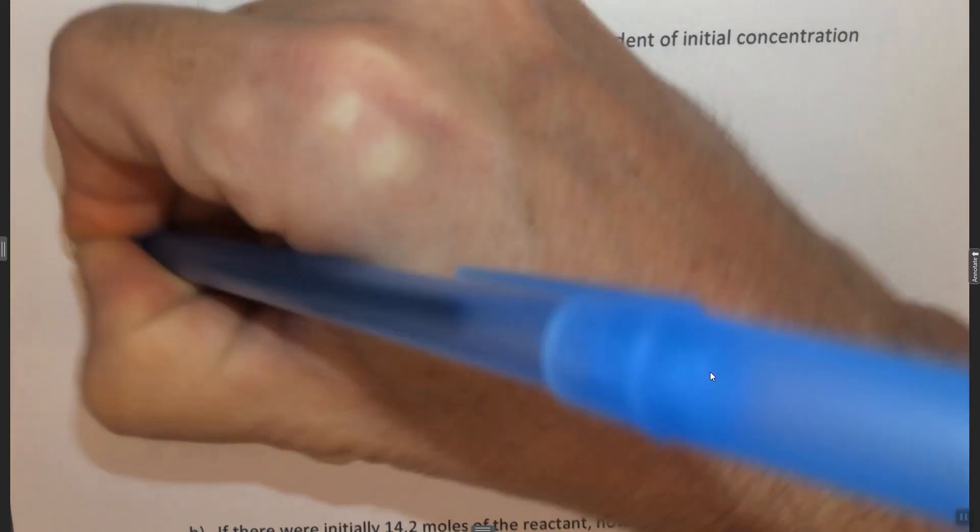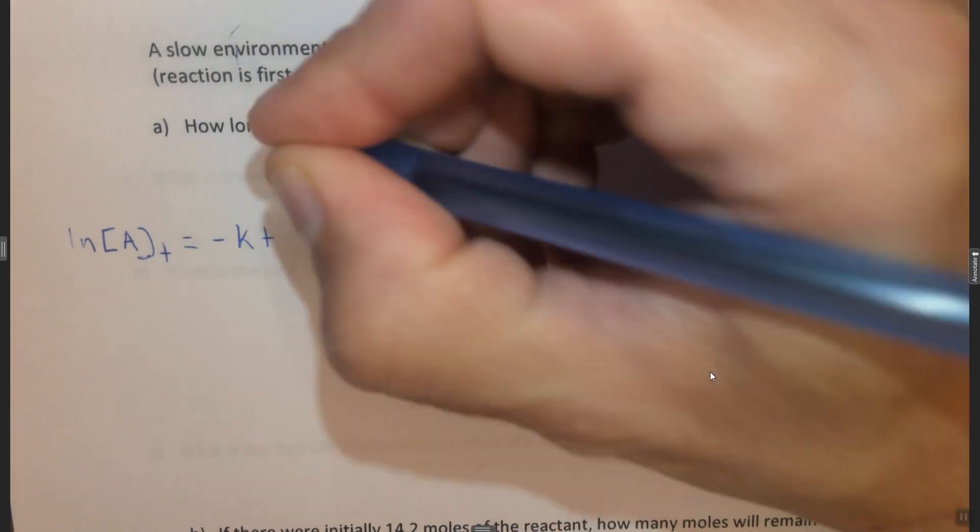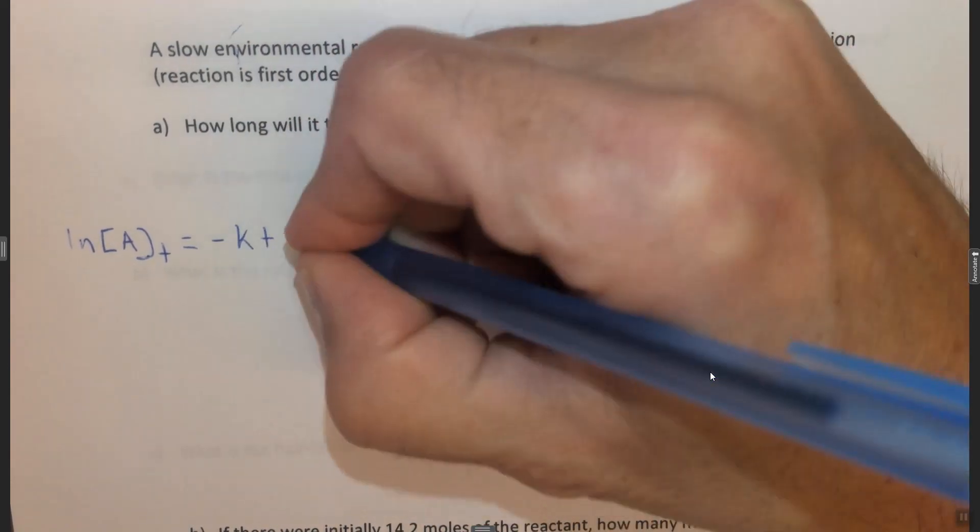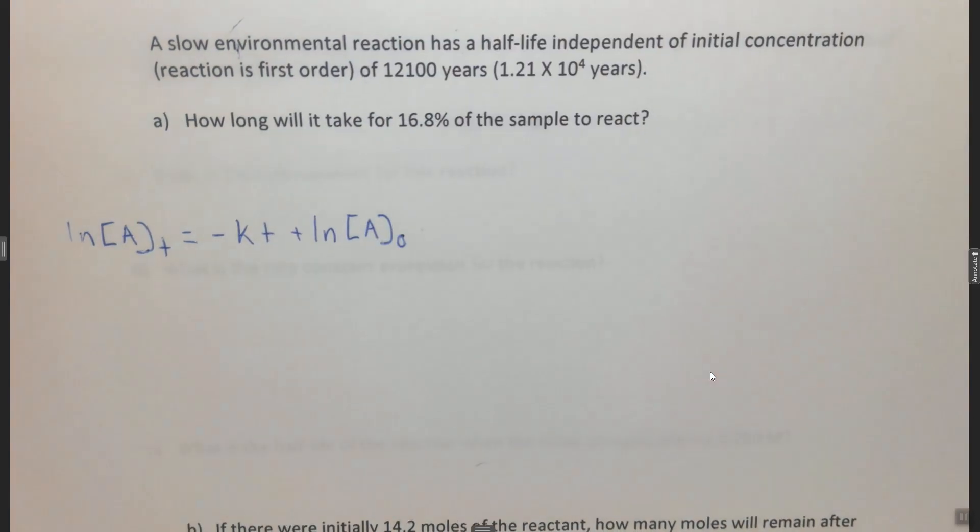Here I'm going to use it for A's. So the ln of the concentration of A at some time equals negative kT plus the ln of the initial concentration of A. This is the integrated first-order rate law, which is just something you kind of have to know.